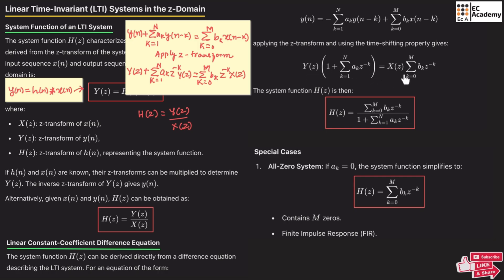From this equation, taking the ratio Y(z)/X(z), we can write H(z) as: summation from k=0 to M of b_k·z^(−k), divided by 1 plus summation from k=1 to N of a_k·z^(−k). So we have obtained the system function H(z) from the difference equation. In this expression, the roots of the denominator (a_k terms) are known as poles, and the roots of the numerator (b_k terms) are known as zeros.